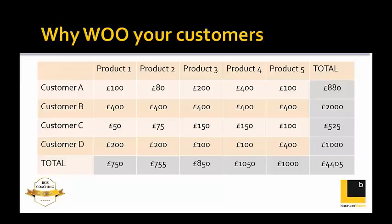When you've completed the grid — which may take a bit longer given you might have a far bigger chart than what's shown on screen — every cell contains the possible sale of a product to each customer. Total across the top and bottom. In this case the total comes to £4,405. The bottom-right cell should equal both the right-hand column total and the bottom row total if everything is done properly.